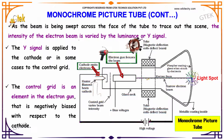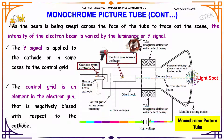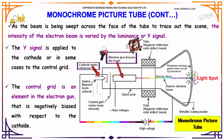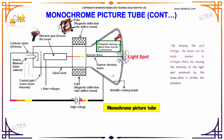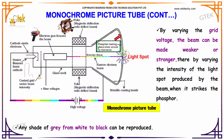As the beam is swept across the face of the tube to trace out the scene, the intensity of the electron beam is varied by the luminance or Y-signal. The Y-signal is applied to the cathode and in some cases to the control grid. The control grid is an element in the electron gun that is negatively biased with respect to the cathode. By varying the grid voltage, the beam can be made weaker or stronger, thereby varying the intensity of the light spot produced by the beam when it strikes the phosphor. Any shade of grey from white to black can be reproduced.